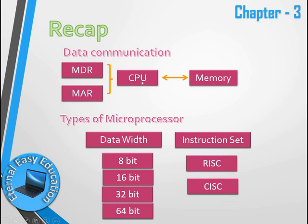To recap: there are two registers in the CPU — the data register (MDR) and the address register (MAR). CPU and memory communicate via read and write operations. Microprocessors are classified into two categories: data-width based (8-bit, 16-bit, 32-bit, 64-bit) and instruction-set based (RISC and CISC).